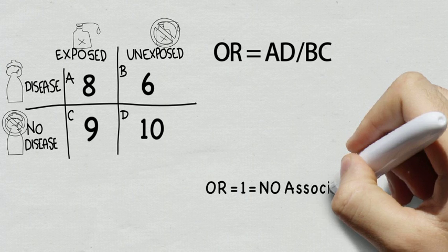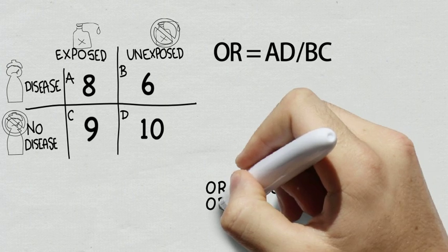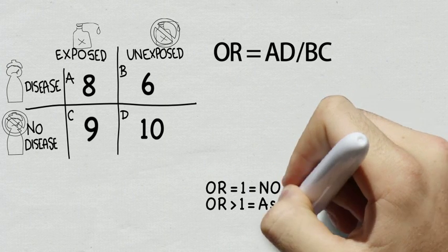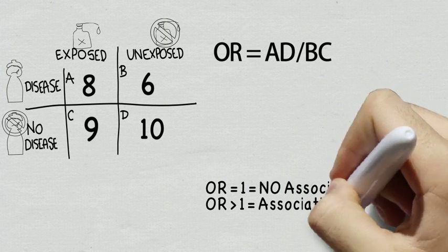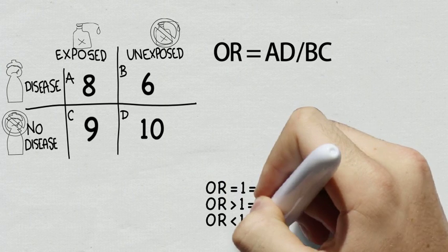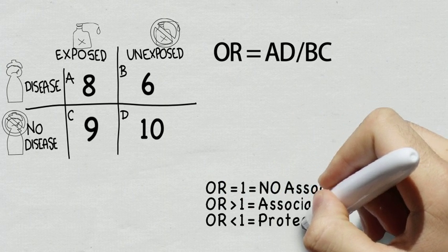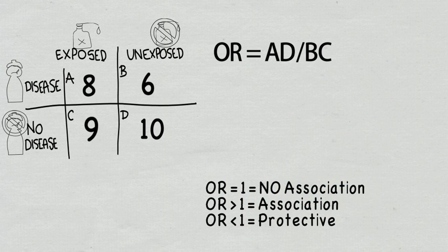If the odds ratio equals one, there's no association between the exposure and the disease. If the odds ratio is greater than one, that means there is an association. If it's less than one, that means the exposure is actually protecting people from getting the disease.